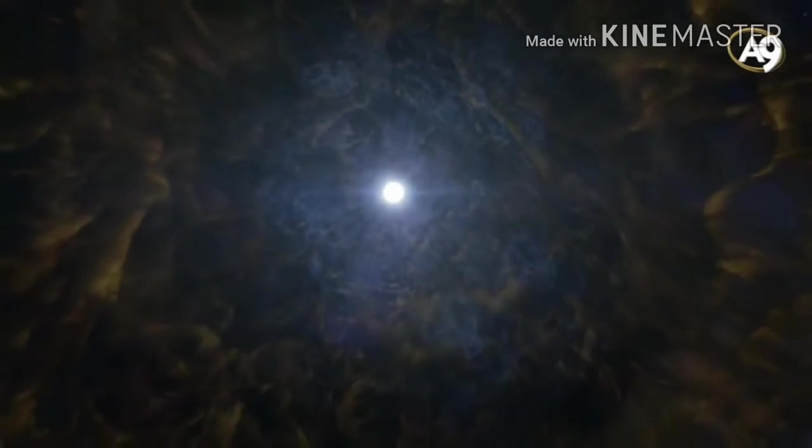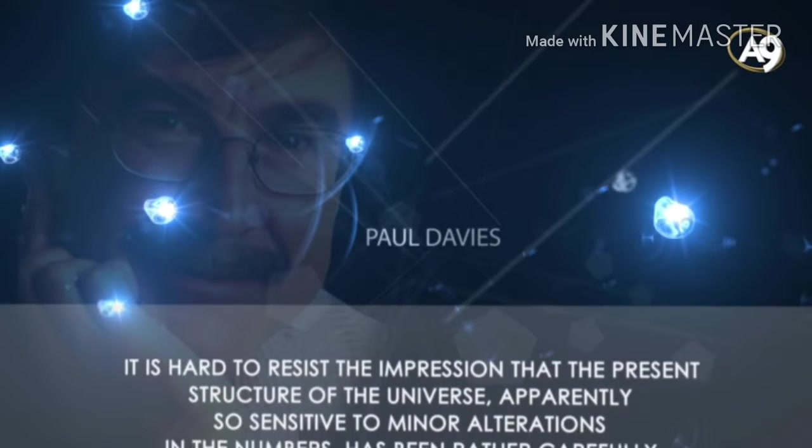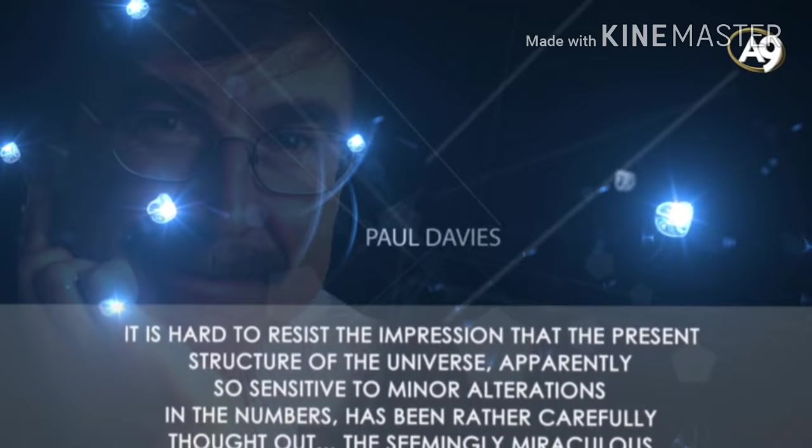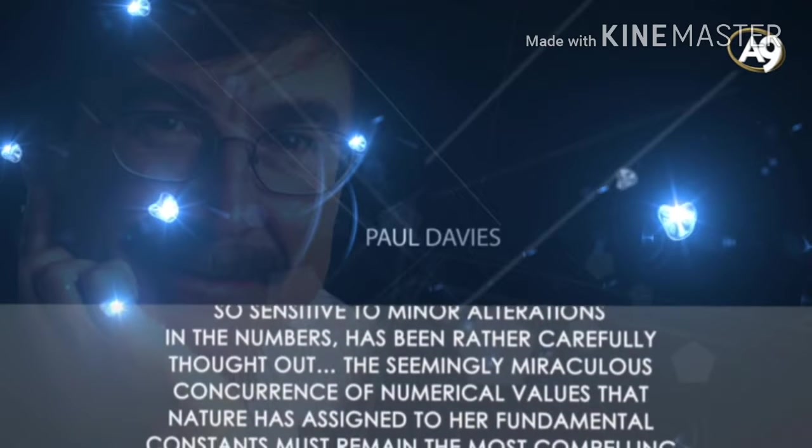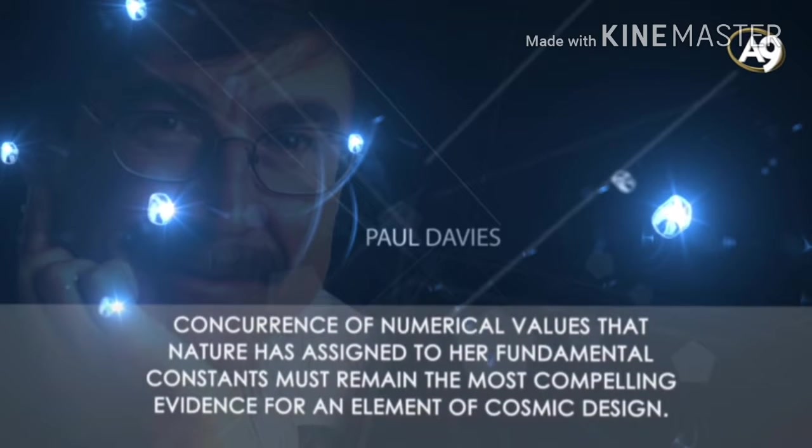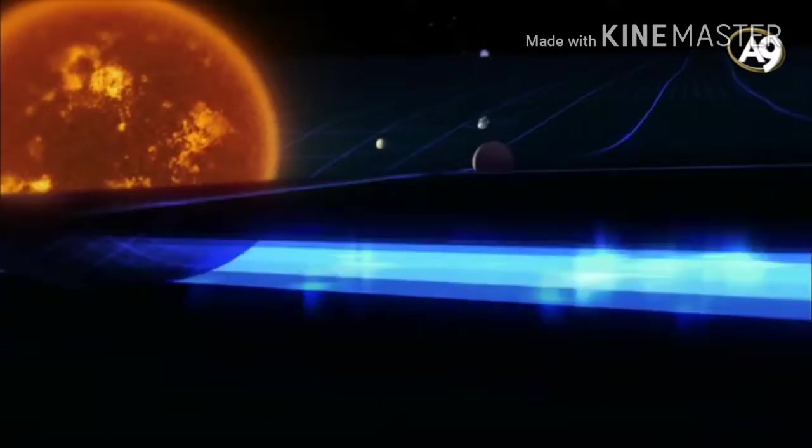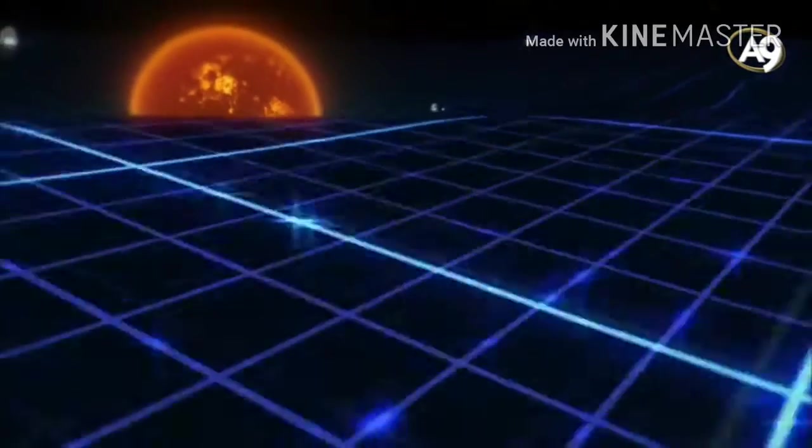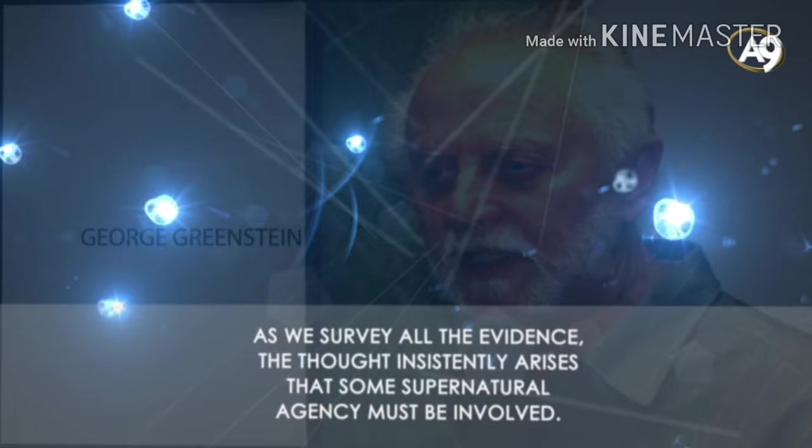Paul Davies also explained the unavoidable consequences to be derived from these precise balances and calculations. It is hard to resist the impression that the present structure of the universe, apparently so sensitive to minor alterations in the numbers, has been rather carefully thought out. The seemingly miraculous concurrence of numerical values that nature has assigned to her fundamental constants must remain the most compelling evidence for an element of cosmic design. In relation to the same fact, an American professor of astronomy, George Greenstein, writes in his book, The Symbiotic Universe: As we survey all the evidence, the thought insistently arises that some supernatural agency must be involved.